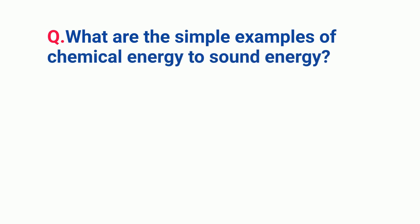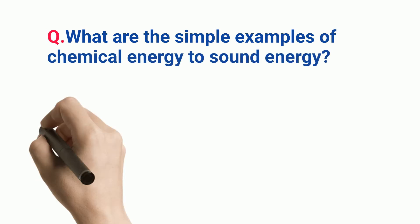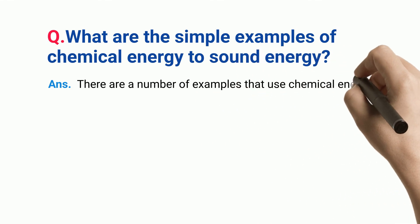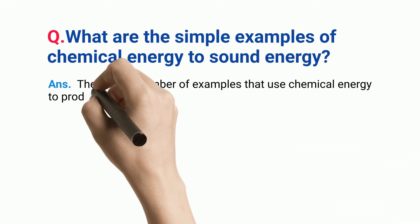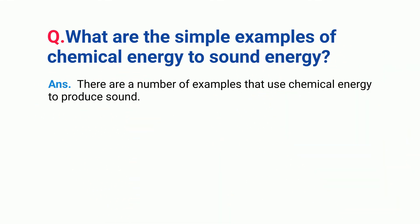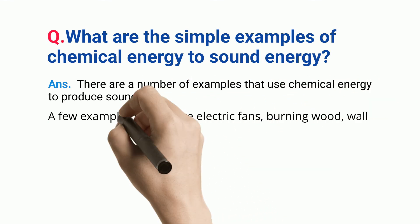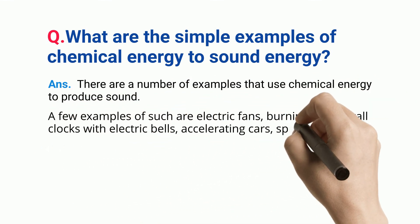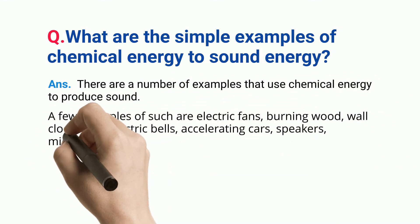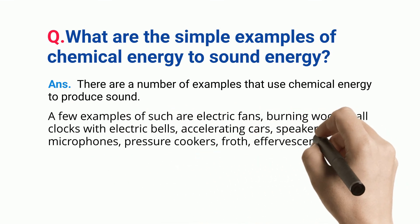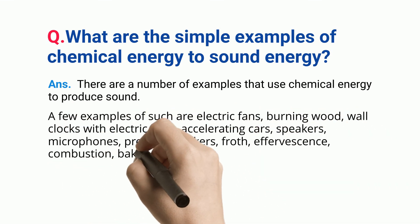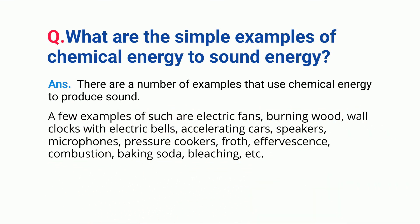What are simple examples of chemical energy to sound energy? There are a number of examples that use chemical energy to produce sound. A few examples are electric fans, burning wood, wall clocks with electric bells, accelerating cars, speakers, microphones, pressure cookers, froth, effervescence, combustion, baking soda, and bleaching.